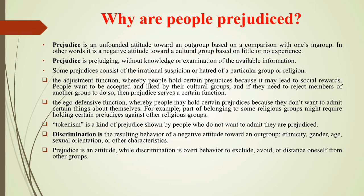Prejudice is judging without knowledge or examination of valuable information. Why are people prejudiced? First, the judgment function: people hold certain prejudices because it may lead to social reward — they want to be accepted and liked by their cultural groups, and if they need to reject members of another group, prejudice serves a certain function. The second is the ego-defensive function. Discrimination is the resulting behavior of a negative attitude toward an out-group based on ethnicity, gender, age, sexual orientation, and other characteristics. Prejudice is an attitude, while discrimination is overt behavior to exclude, avoid, and distance oneself from other groups.